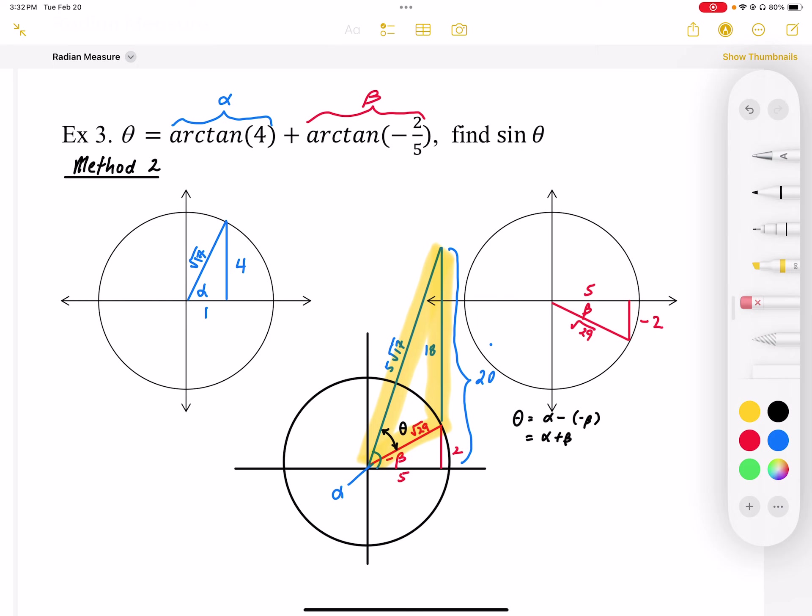So question number three, we're going to do an alternate method for this. We've set up the angle alpha as arctan of 4, so I've set that up in blue. And we've set up arctan of negative 2 over 5 as beta in red, so we end up with this red triangle on the right-hand side.